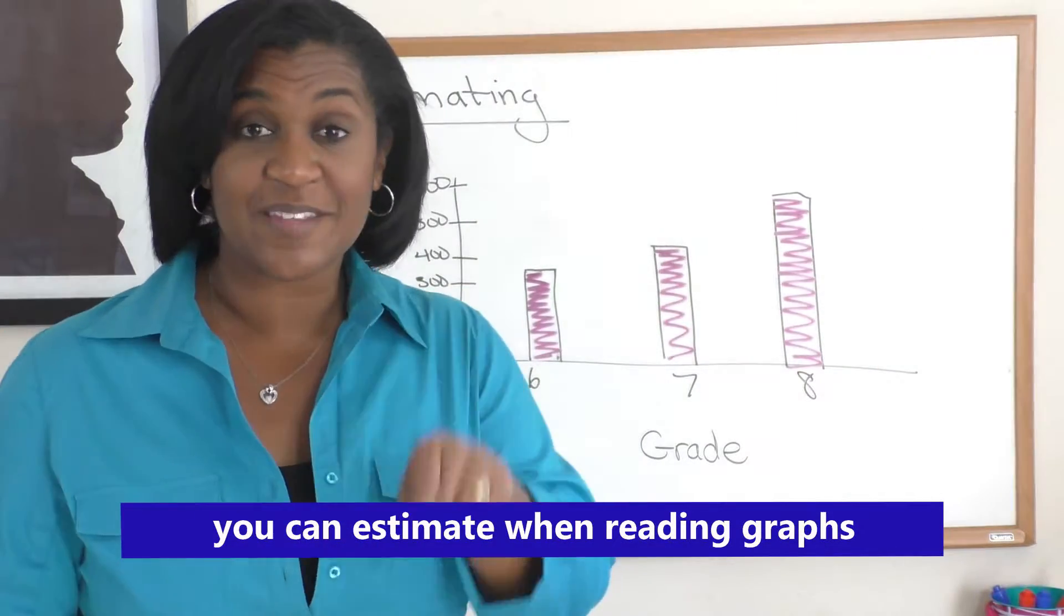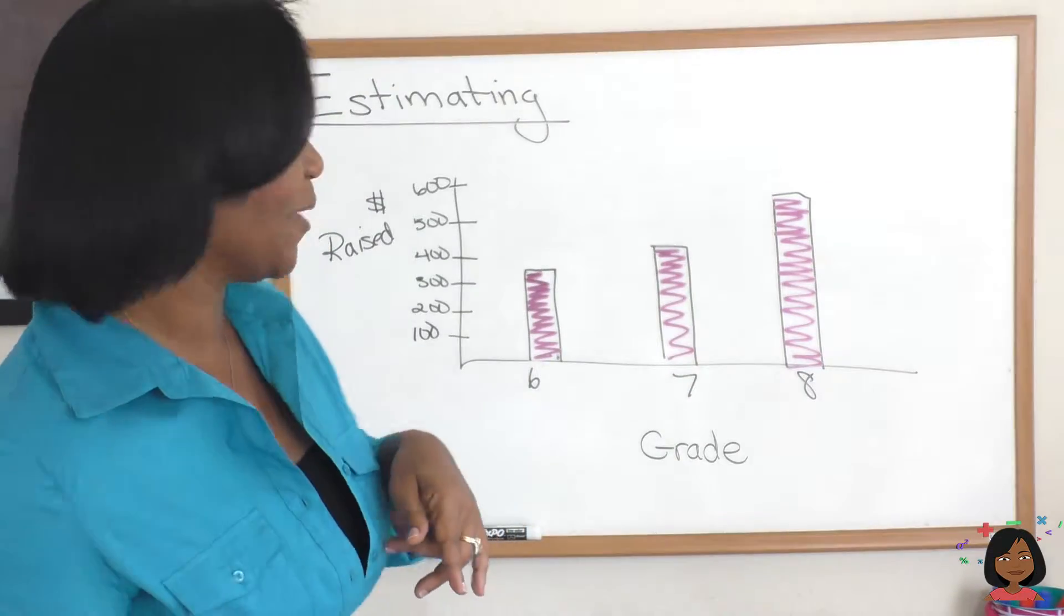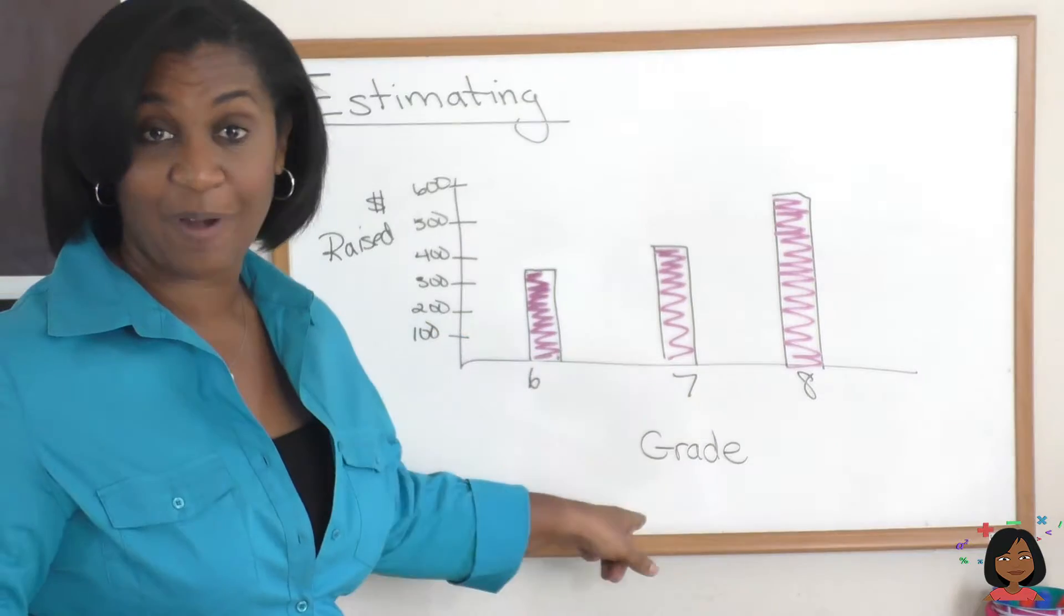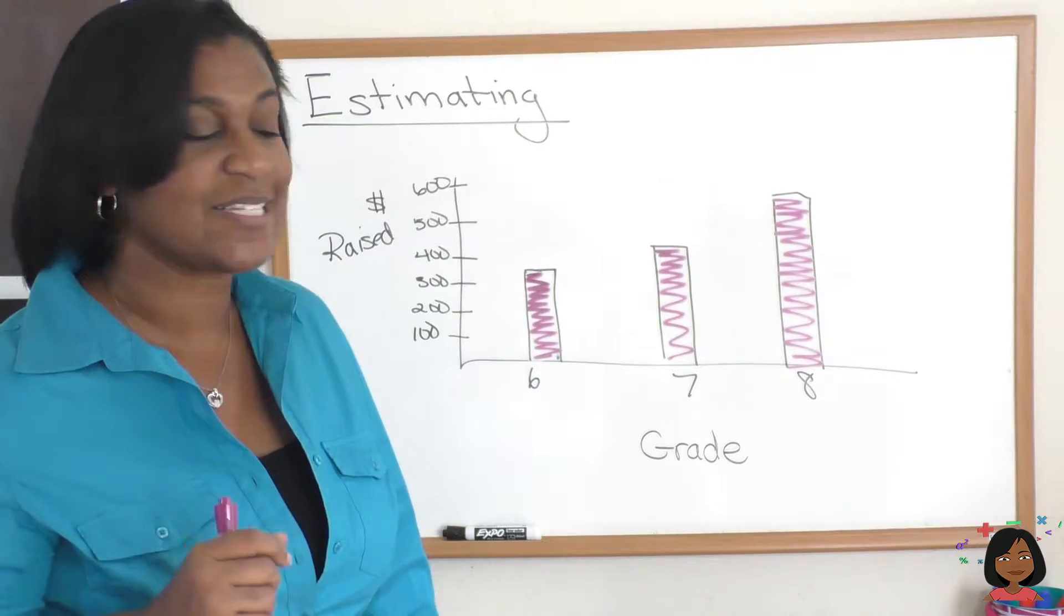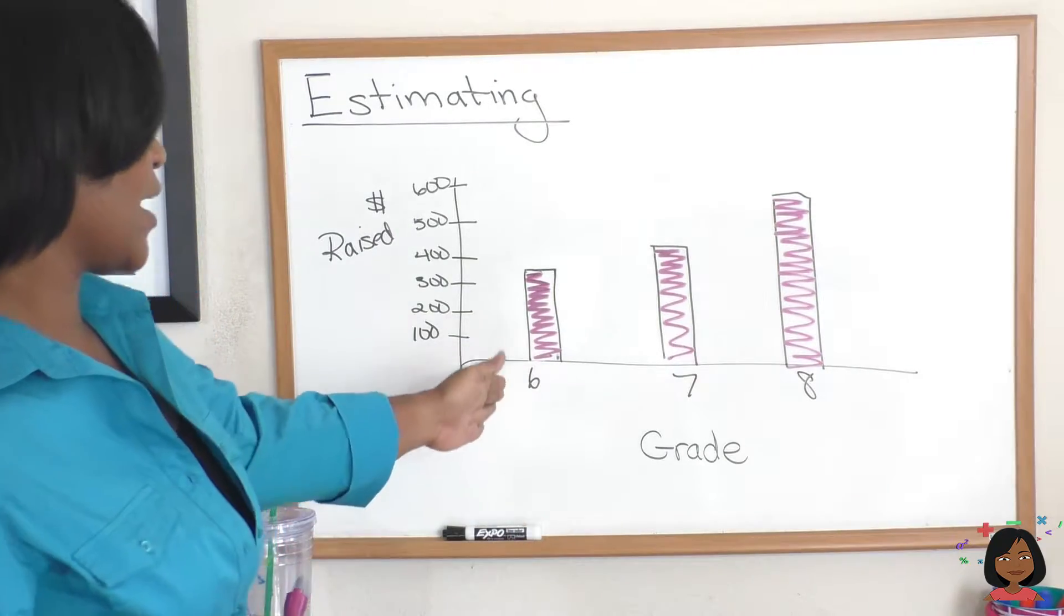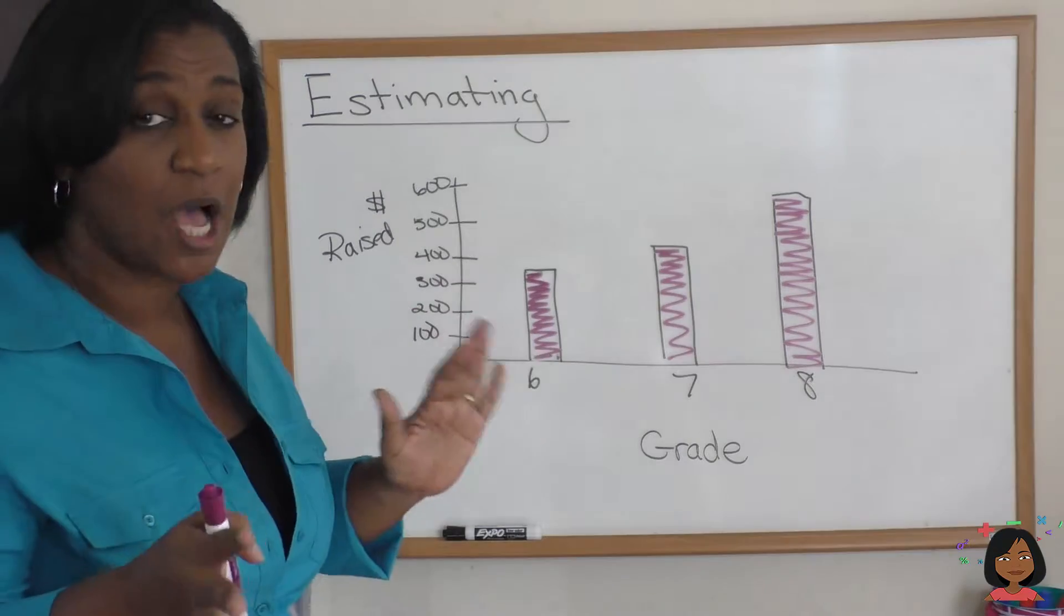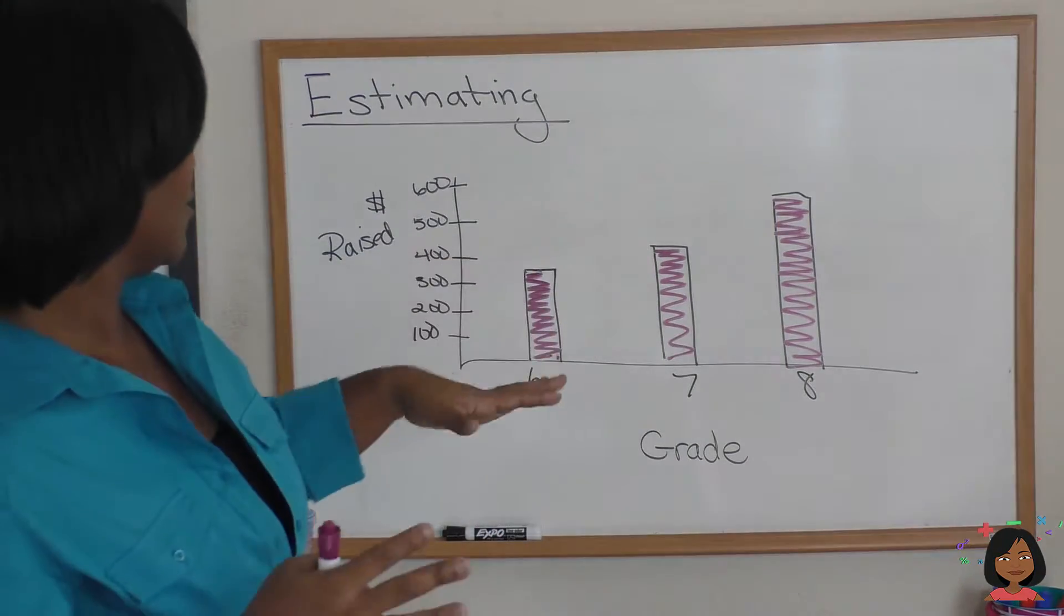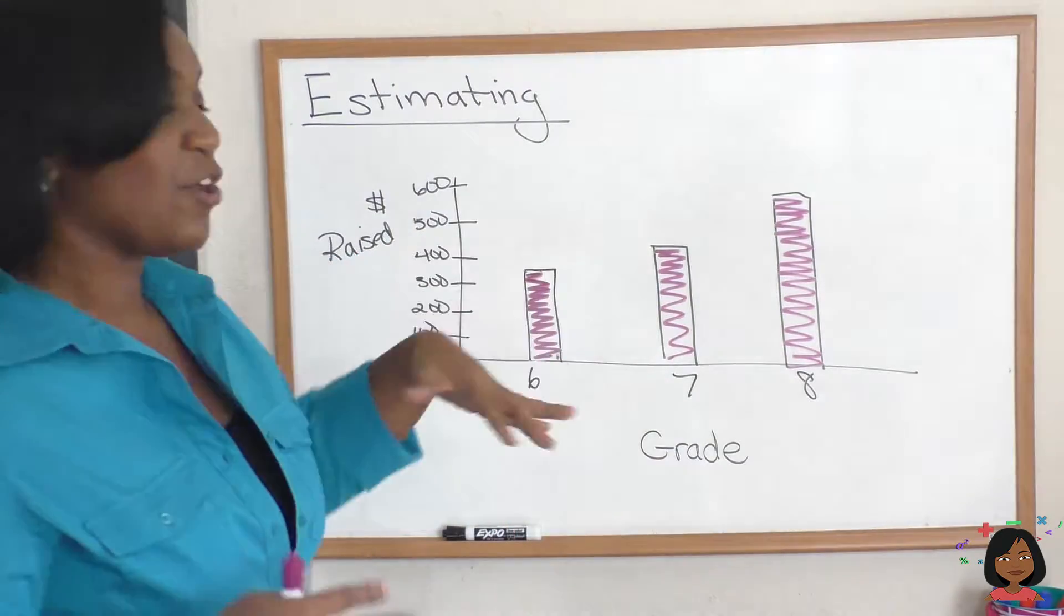Another reason we use estimation is when looking at graphs. So take a look at this one. We have 6th, 7th and 8th grade and they were raising money, let's say for their class party. Let's see how they did. We see the 6th grade raised something close to about $400, the 7th grade is probably right in the middle between $400 and $500, and the 8th grade is pretty close to $600.